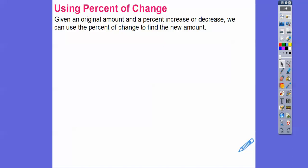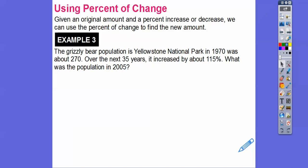Given an original amount and a percent increase or decrease, we can use that percent change to find the new amount. So here's an example. The grizzly bear population in Yellowstone National Park in 1970 was about 270 of them. Over the next 35 years, so in 1970, 35 years from then is 2005. Over the next 35 years, it increased by 115%. So what's the population in 2005? We've got to find what is 115% of 270, and then we just add that to 270. So find the amount of change. 115%, if we change that to a decimal, we move the decimal over two places to the left, so it becomes 1.15.